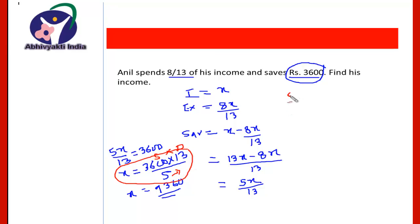That saving—sorry, income—is equal to saving multiplied by denominator divided by the difference between the numerator and the denominator. Can we use this trick? I mean, can we go directly to this step? For this we will see one more question.